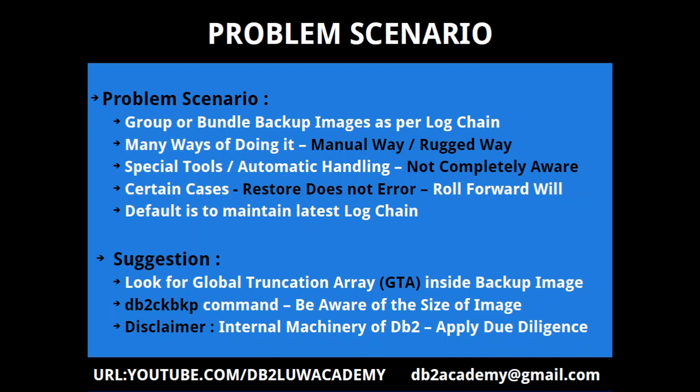There are many ways of doing this to group or bundle the backup images. In certain cases, the restore does not error, but when you go to the roll forward stage, that is when you find that you're not able to roll forward with the existing log files — it is looking for some different log chain, like the C000, C001, C002 folders. It keeps multiple copies of log files based upon how you do your backup and restore strategy. I'm giving you a very manual, rugged way — it's a hard way of doing things, but if you know this, it is better for the understanding. The suggestion is to look for the global truncation array, or GTA, inside your backup image.